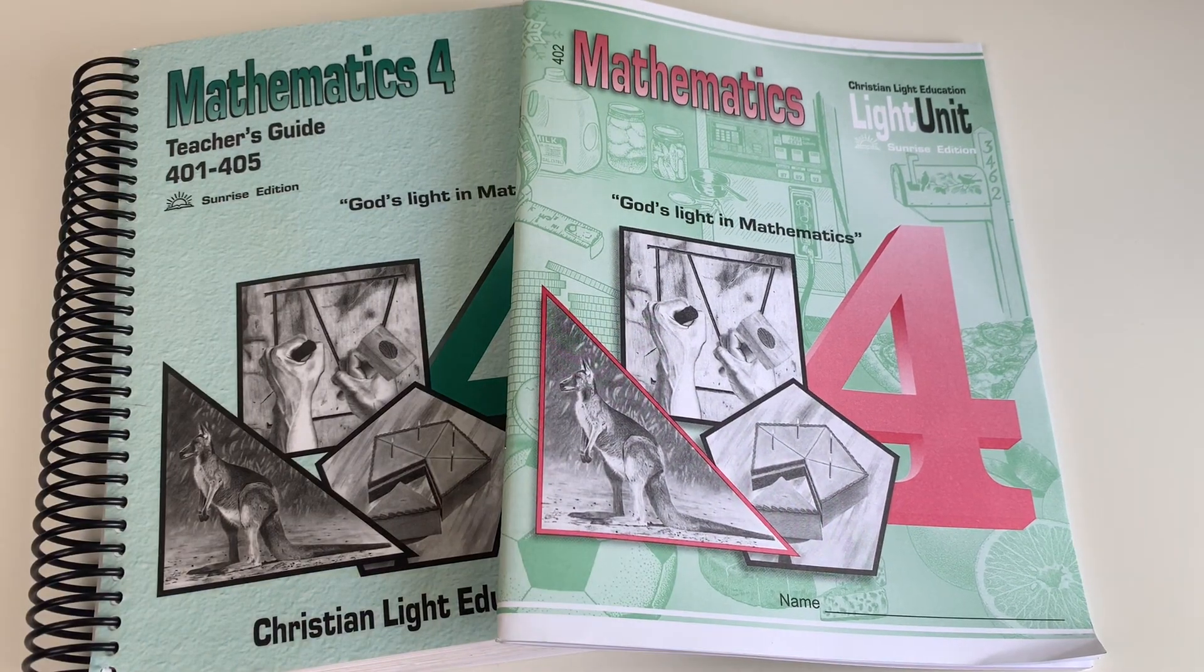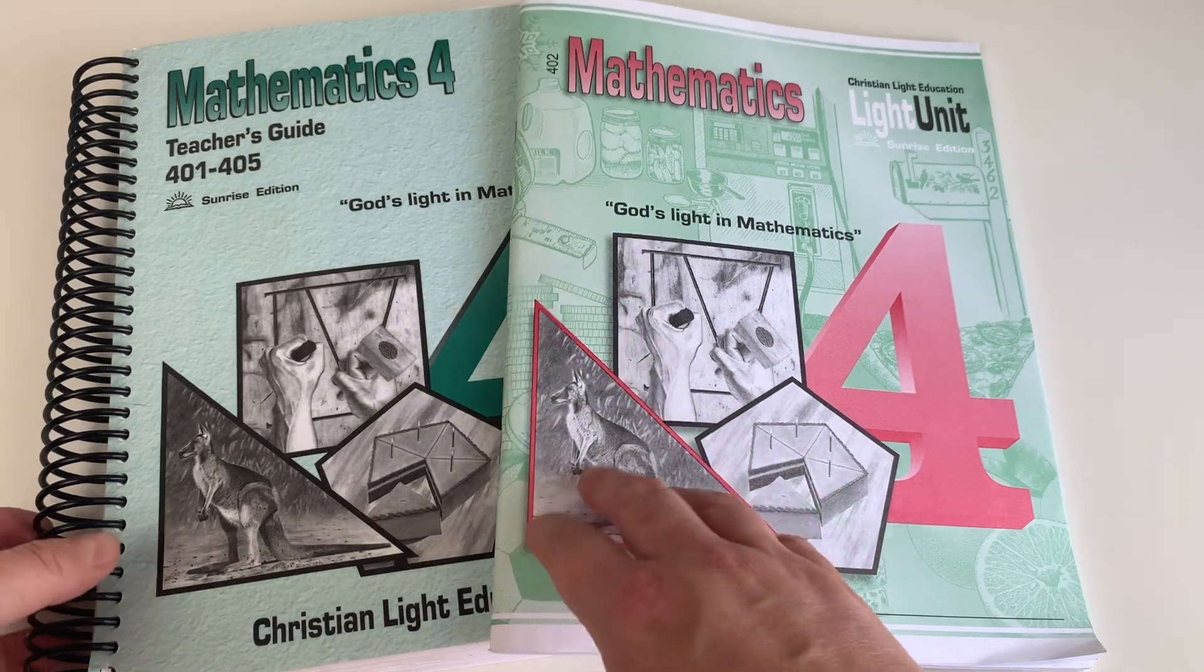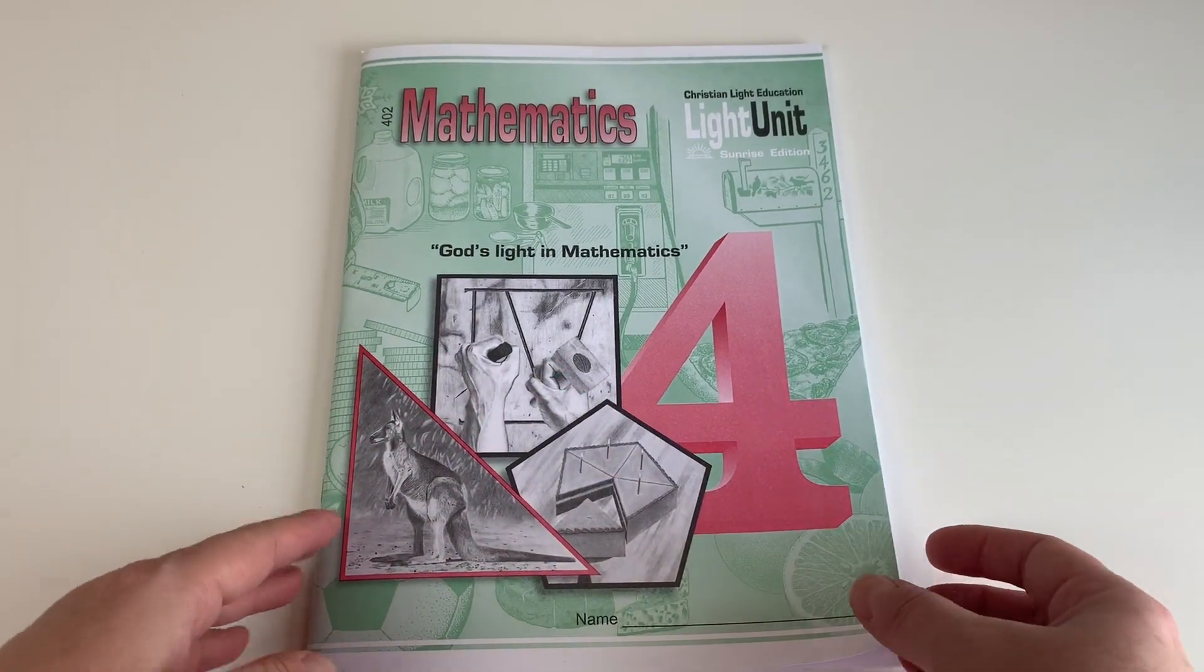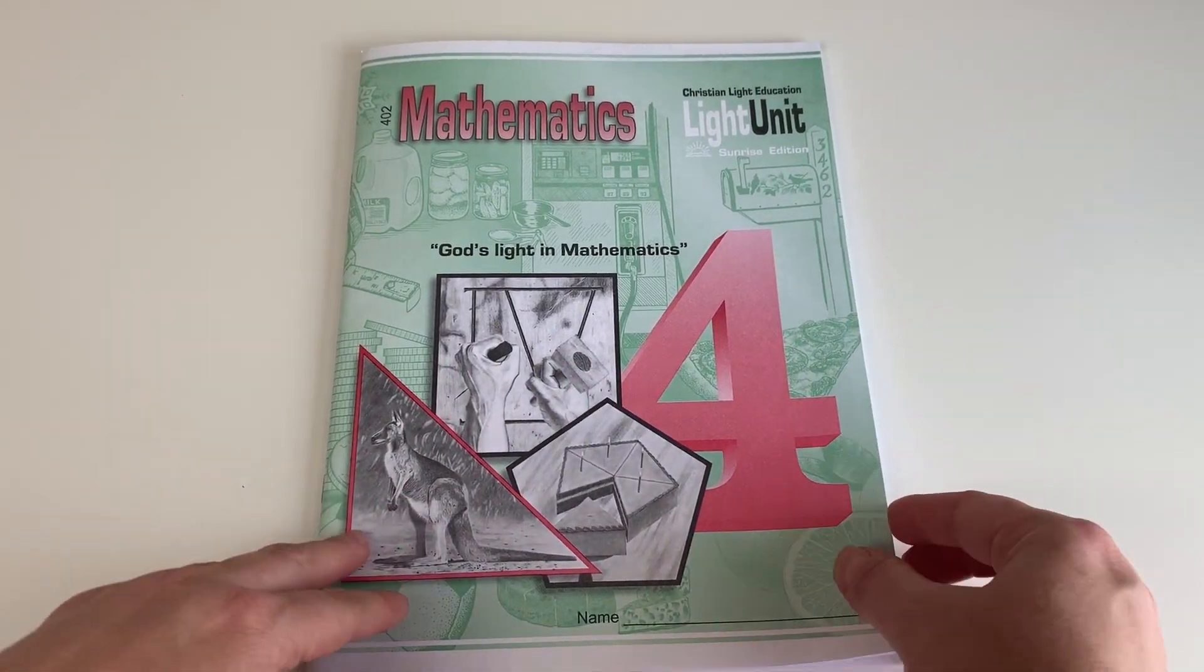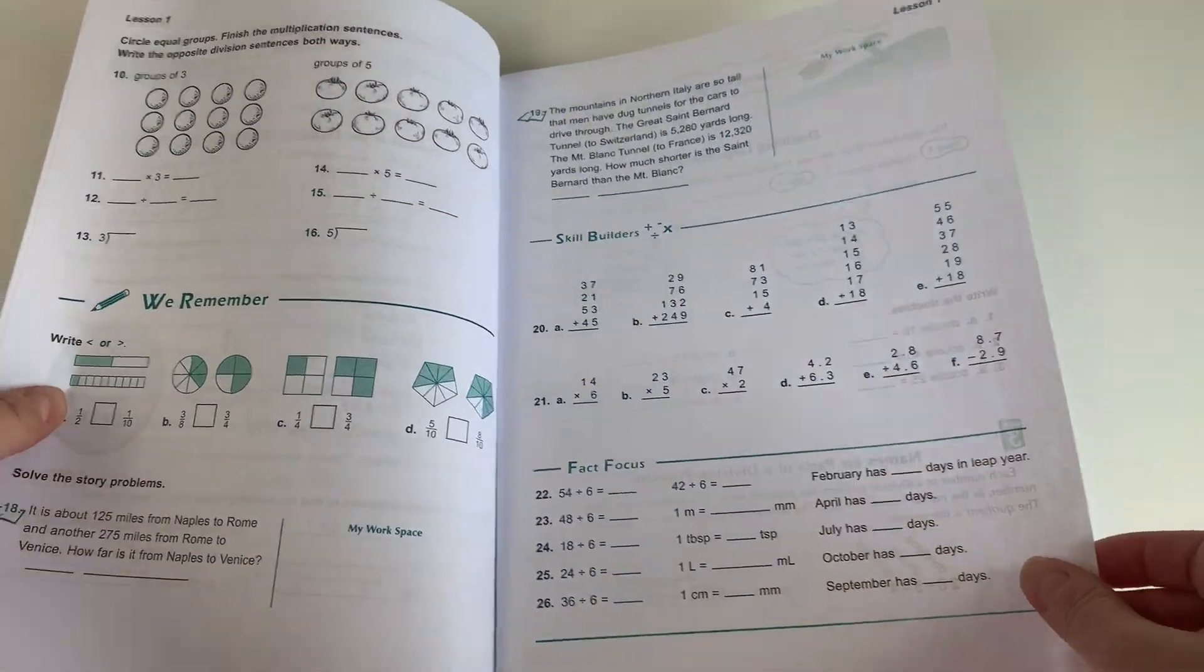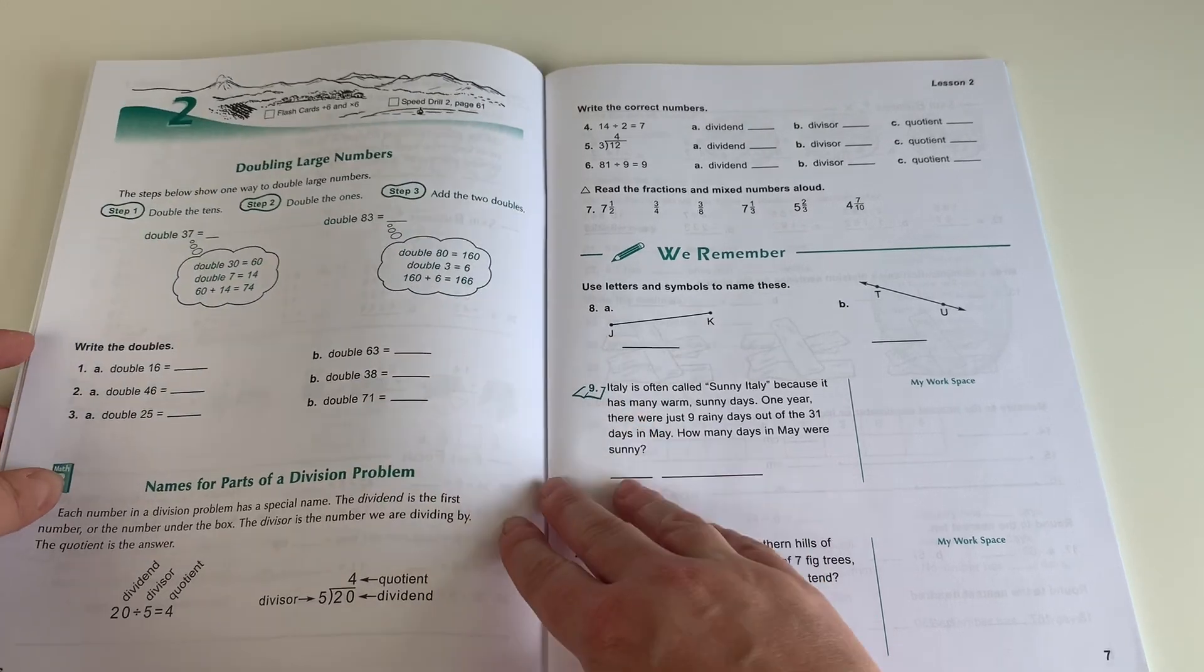For math this year, she'll be using Mathematics 4 by Christian Light Education. We actually decided to switch her over from Abeka Math to Christian Light this year because, although we love Abeka Math for the younger years, I feel like Christian Light is so much better at explaining new concepts. So my oldest daughter has used this math since kindergarten and we have loved it.